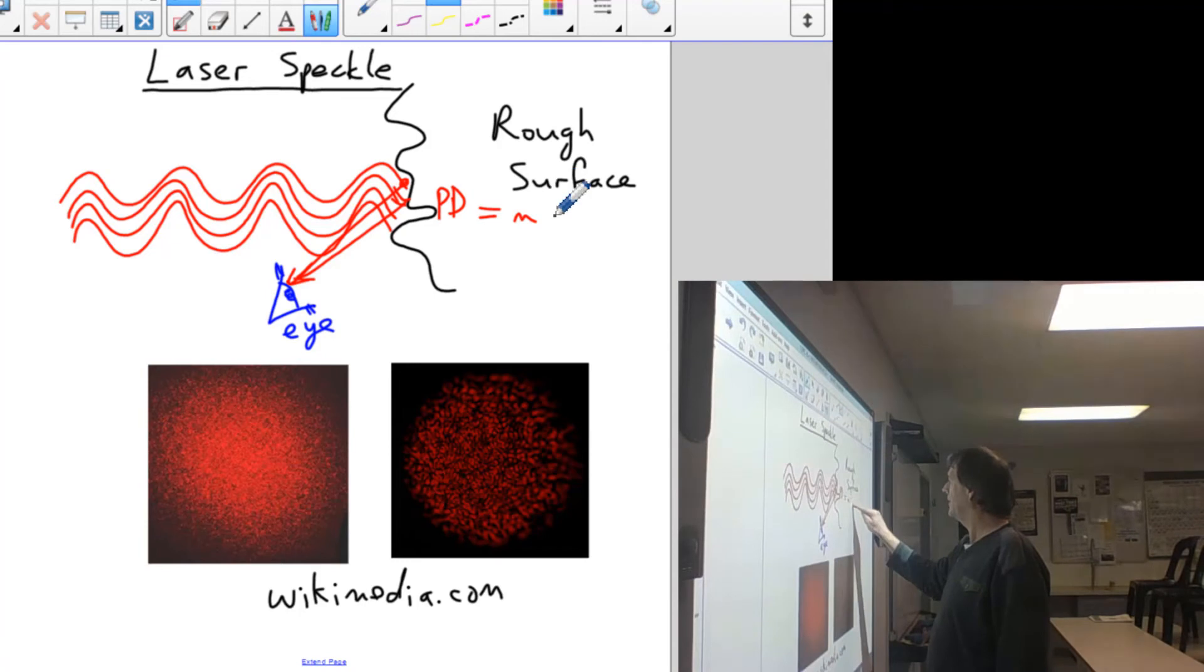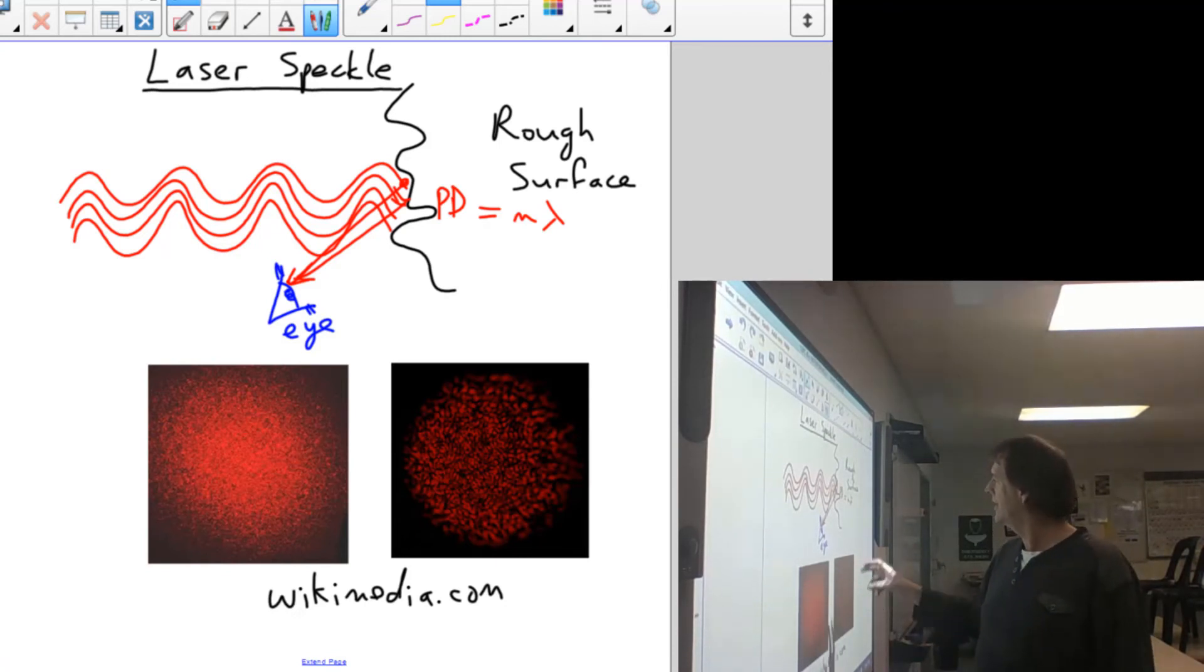And because of the path difference there, if the path difference is whole wavelengths, you're going to get a bright spot there due to constructive interference. And if it happens to be an odd number of half wavelengths, like a half a wavelength, one and a half wavelengths, it's going to give you a black spot.